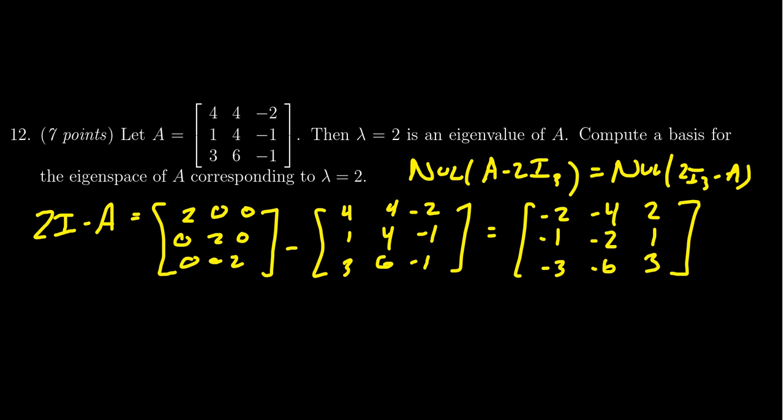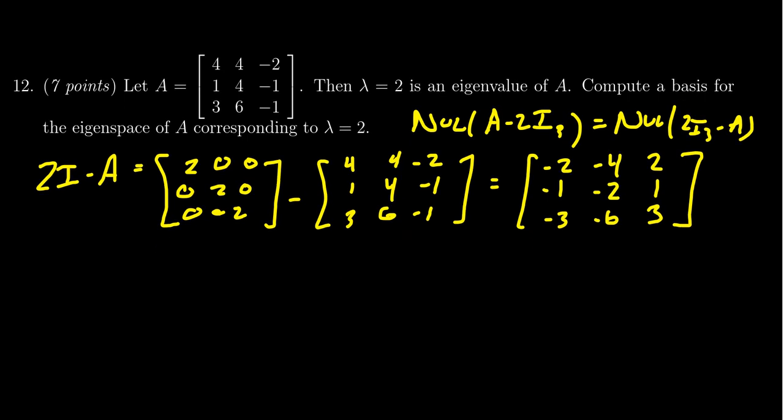In which case, now we need to row reduce this matrix. We need to find a basis for the null space of this matrix right here. Now, because lambda equals 2 is an eigenvalue, we can guarantee that there's going to be a row of zeros in this situation. The first thing I'm going to do is I'm going to grab the first row and times it by negative 1. So what that then gives us is a new matrix: 1, 2, negative 1, negative 2, negative 4, 2, and negative 3, negative 6, 3.